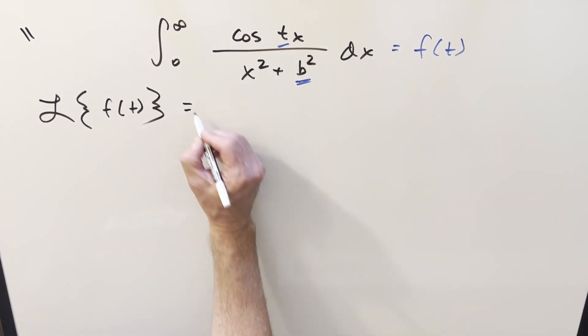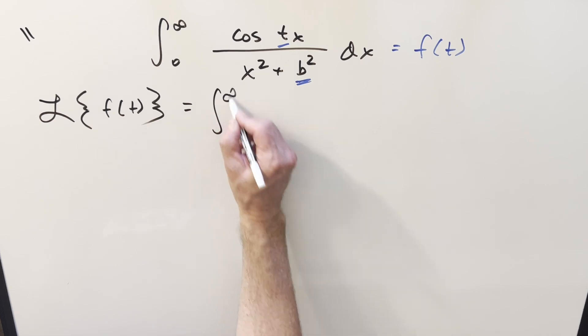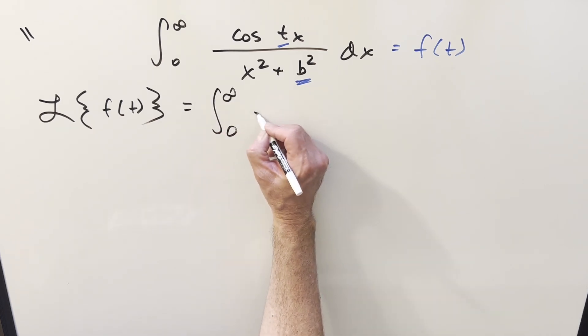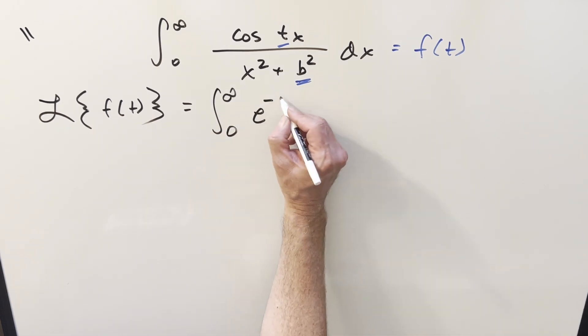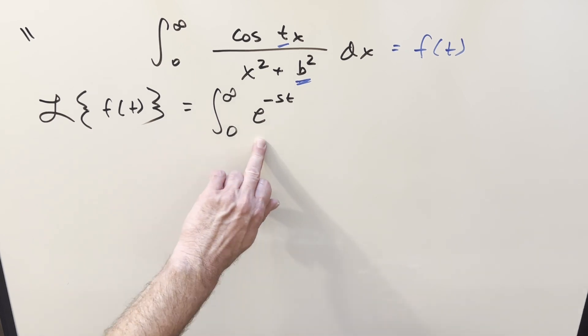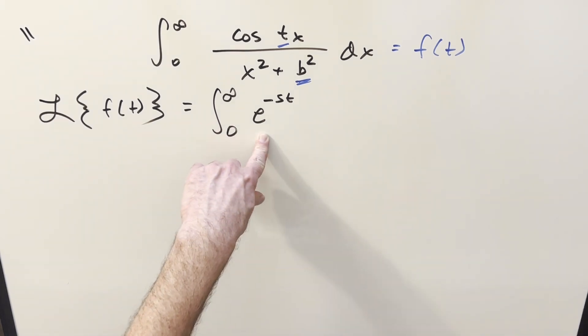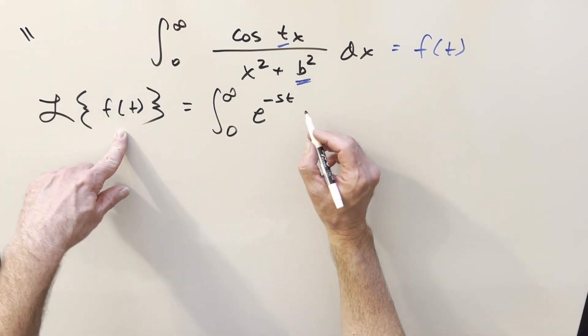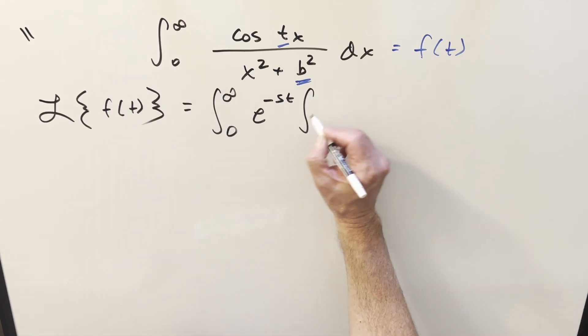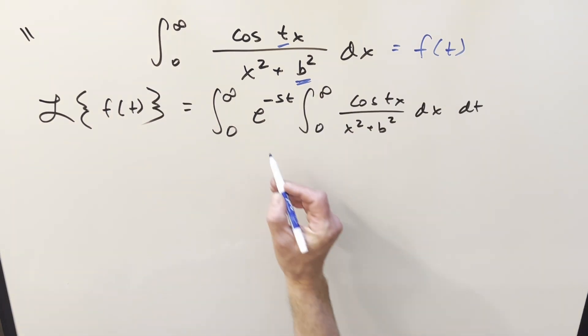So by the definition of Laplace transform, I can just write this out. Trying to keep the variables consistent. We'll write our e to the minus st and then let's expand out this whole integral here and write it in here.